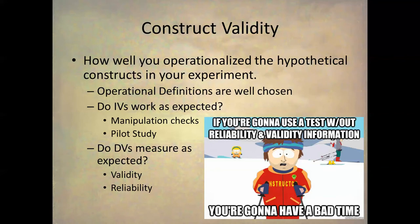How do you ensure construct validity? You ensure that the independent variables are working as expected. In our example experiment from the beginning of the semester, the IV was the amount of violence in two cartoon clips. You would do a pilot study — a little mini-study before the real study — and you'd want a manipulation check. That is, you manipulate the level of violence and check to see if subjects actually recognize the difference and that it's in the direction you want. Subjects would rate the clips on some scale, and hopefully there would be a significant difference, with the violent clip rated as more violent. That's a manipulation check.